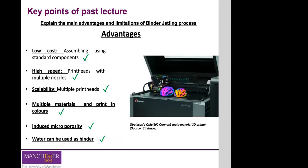In terms of advantages of binder jetting processes, the cost is quite attractive compared to other manufacturing systems because you can use standard components from inkjet printers to build a 3D inkjet printer. The speed can also be significantly increased by incorporating multiple nozzles in each print head, and the process can be scaled up further by incorporating multiple printing heads with multiple nozzles.